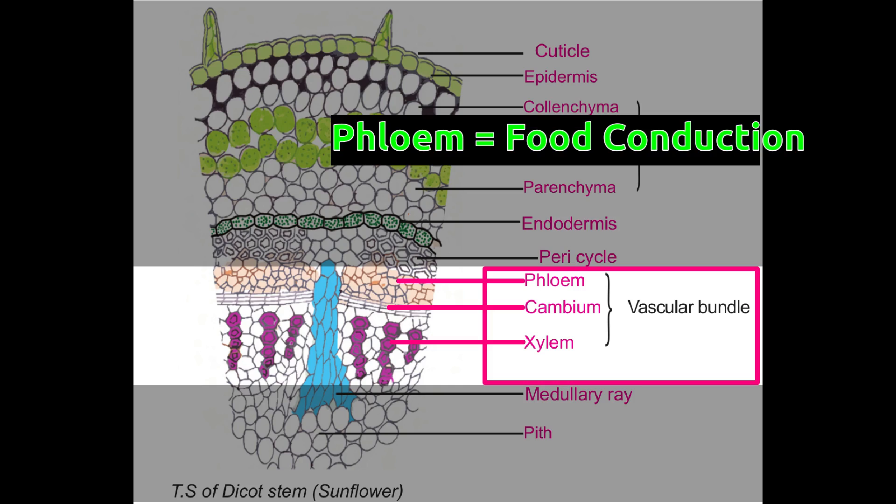Phloem is the outer part of vascular bundle and conducts food prepared by photosynthesis to other parts of plants.